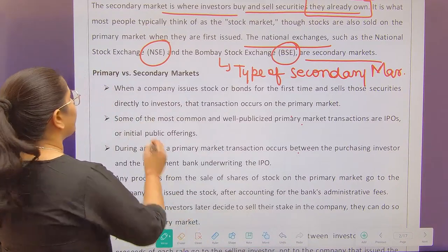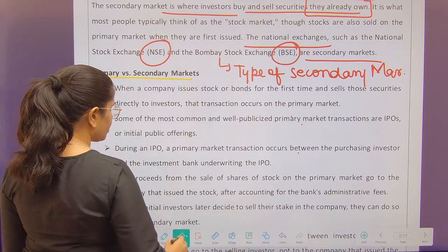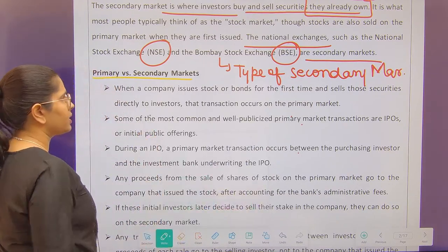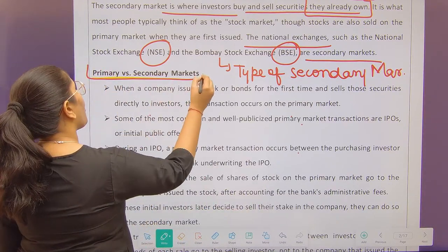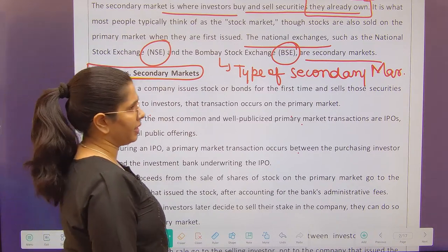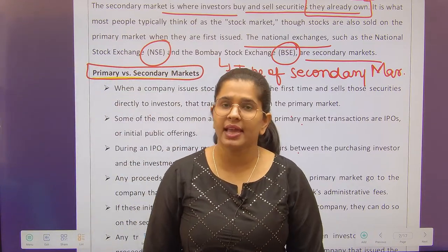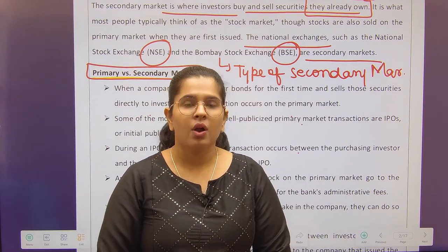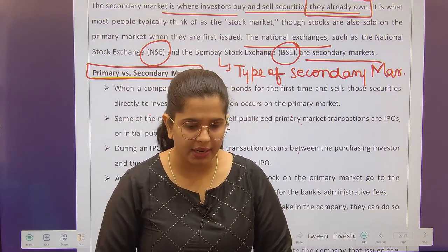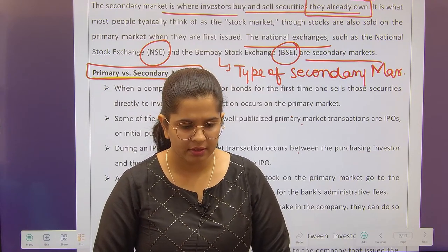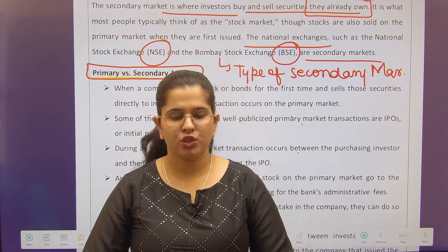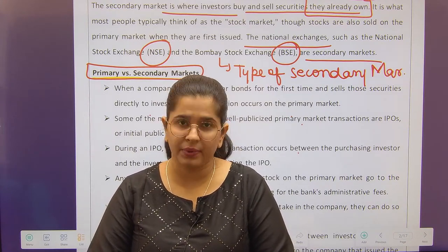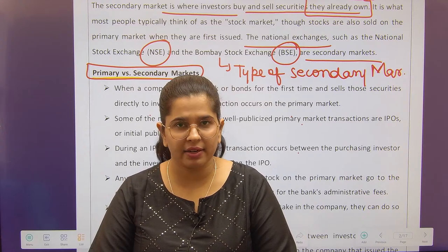Next, let's talk about pricing — there is a difference I want to cover because there can be confusion about it. Primary market versus secondary market — there is a big difference in pricing. Who decides the price in primary market? Prices of securities in primary market are decided by companies along with the help of merchant bankers. We have studied this in primary market.